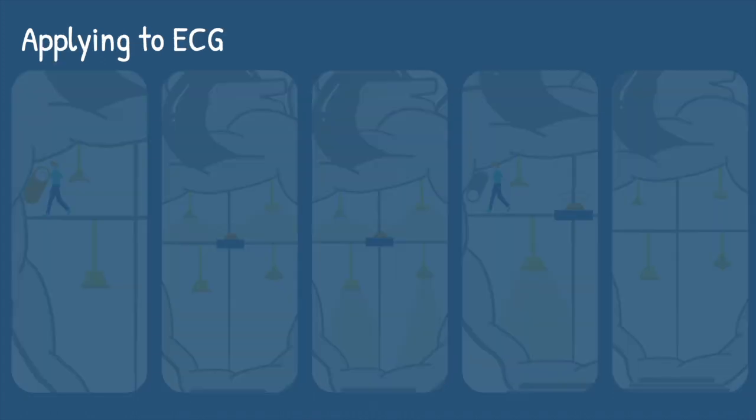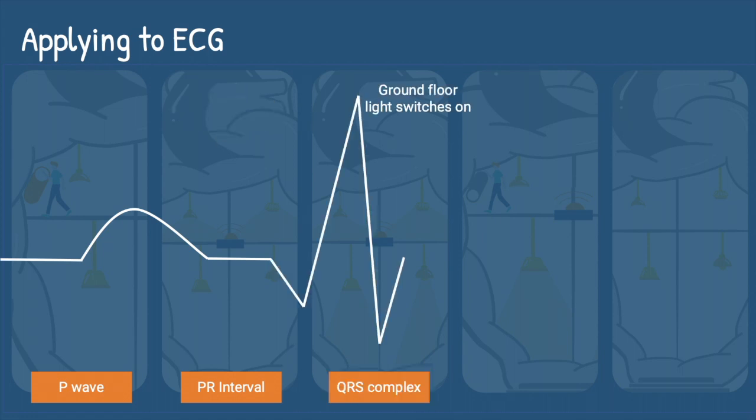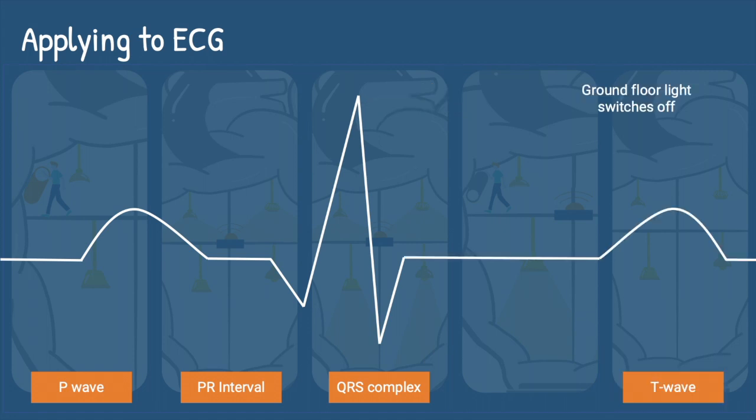So how does this analogy apply to what is happening on an ECG? The P wave represents the moment when the light switch turns on and lights on the top floor switch on. The time from the lights turning on to the light sensor receiving this signal is represented by the PR interval. The QRS complex represents the lights on the ground floor turning on and the T wave represents lights on the ground floor turning off. This represents the cardiac cycle.